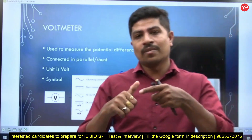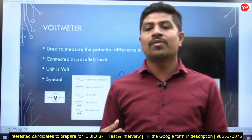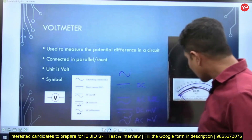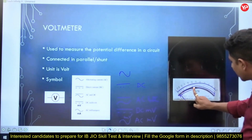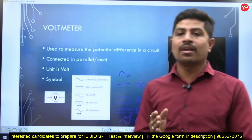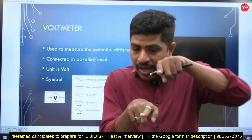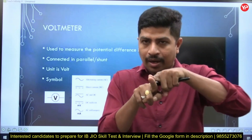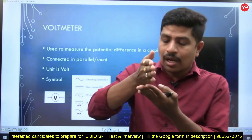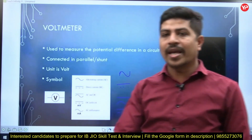In the electronic laboratory you use a multimeter to measure resistance, voltage, and current. But in the electrical laboratory, you take an ammeter separately, a voltmeter separately, and a wattmeter separately. The pointer deflects, and you have to take the reading carefully to avoid parallax errors. Use the mirror: when the needle and its mirror image are superimposed, that is the reading to take.